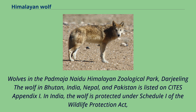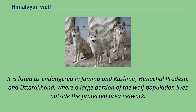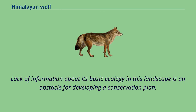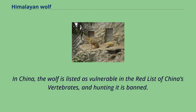The wolf in Bhutan, India, Nepal, and Pakistan is listed on CITES Appendix I. In India, the wolf is protected under Schedule I of the Wildlife Protection Act 1972, which prohibits hunting; a zoo needs permission from the government to acquire a wolf. It is listed as endangered in Jammu and Kashmir, Himachal Pradesh, and Uttarakhand, where a large portion of the wolf population lives outside the protected area network. Lack of information about its basic ecology in this landscape is an obstacle for developing a conservation plan. In Nepal, it is protected under Schedule I of the National Parks and Wildlife Conservation Act 2029, prohibiting hunting. In China, the wolf is listed as vulnerable in the Red List of China's vertebrates, and hunting it is banned.